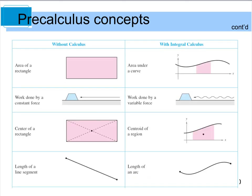In pre-calc, you can find the area of a rectangle, but you need the calc piece to go and find the area underneath a curve. In pre-calc, you can find work done by a constant force, but when our force is no longer constant, as it usually is in the real world, we need to use something like calc to help us find that.